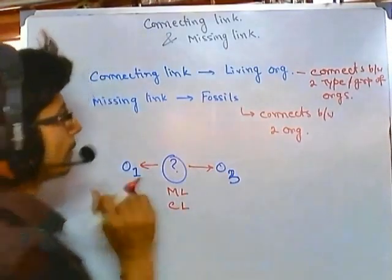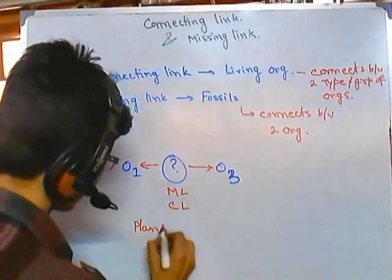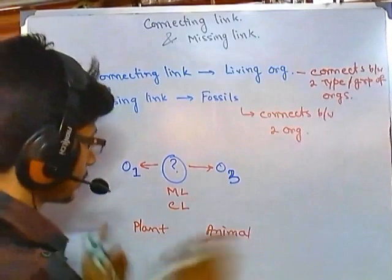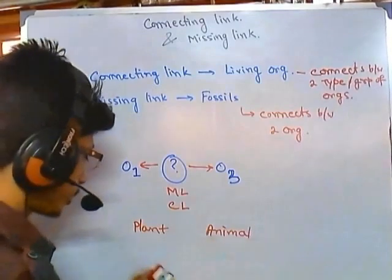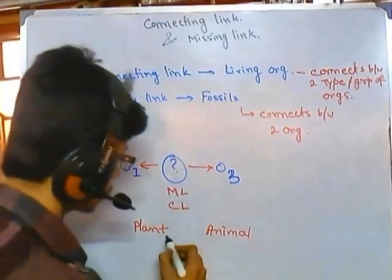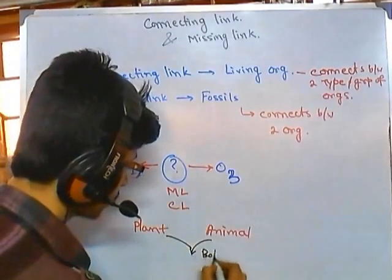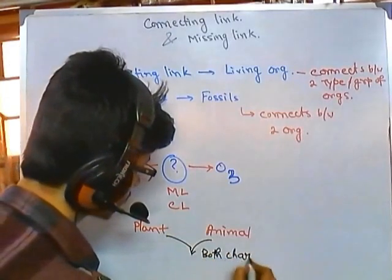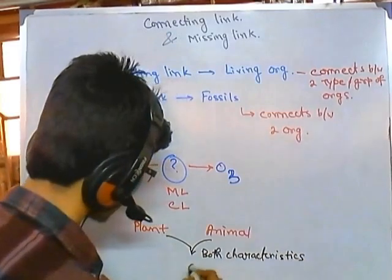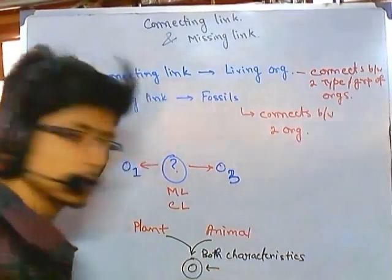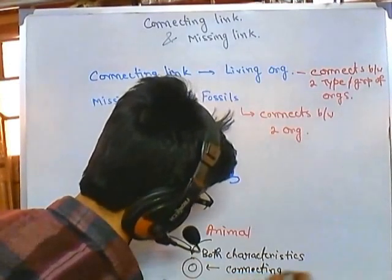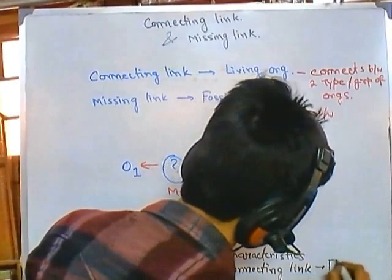For example, let's say we have a plant and then we have an animal. An organism which carries comparative characteristics of both plant as well as animal — both characteristics — that organism will be termed as a connecting link. An example of this kind of connecting link is Euglena.